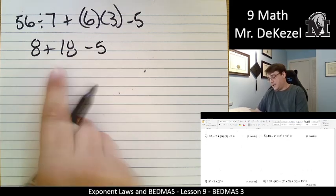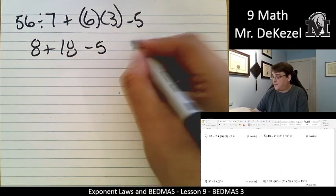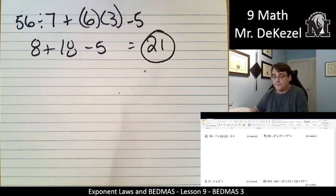Subtract 5. 18 plus 8 is 26, and subtract 5 is 21. Next one.